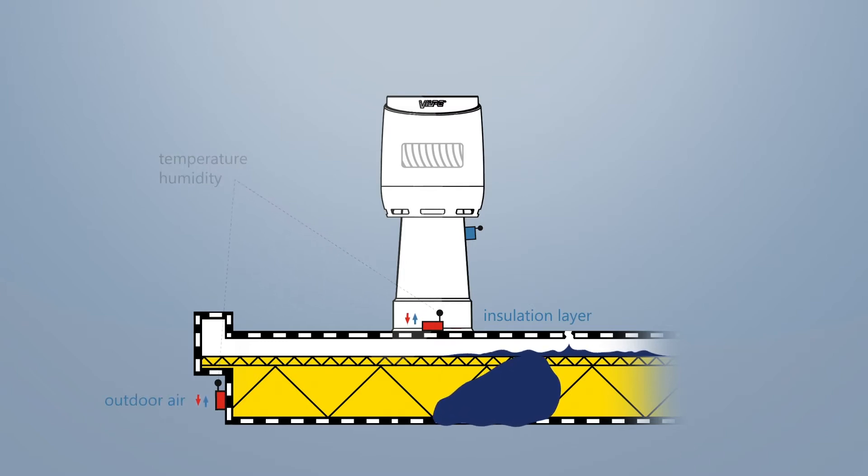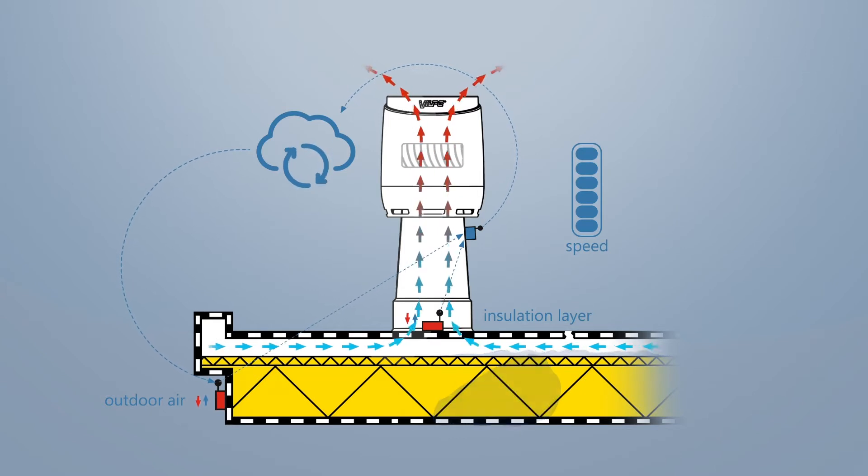This information is sent to the control unit and ends up on the Vilpa cloud service where it is analyzed. If the system detects excess humidity in the insulation layer, the roof fan is automatically activated to work at a higher speed until the structure is dry.